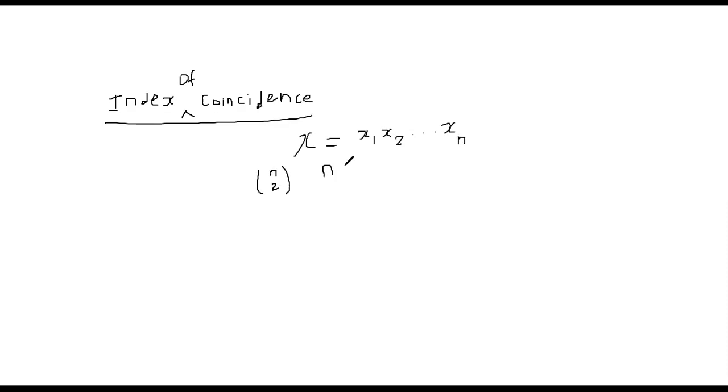Some books might have used something like this nC2. Some books use this notation with a bracket n,2. They both are the same. So this will become the denominator for our probability computation, because we wanted to find out what is the probability that two letters are equal or identical. So we have nC2 here.